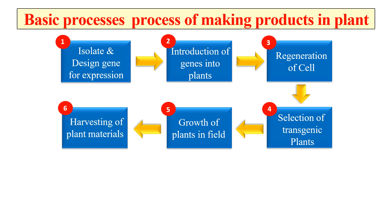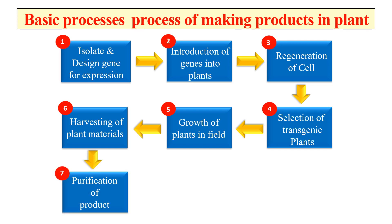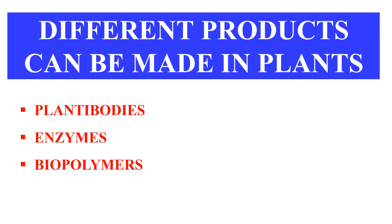After selection of transgenic plants, they are allowed to grow in the fields. As they grow, we can harvest the plant material to get our product. From the harvested plant material we purify the product using various purification techniques like chromatography, centrifugation, etc. This is the process by which we make and purify the product in plants. Some examples of products that can be made include plantibodies — antibodies made within plants.